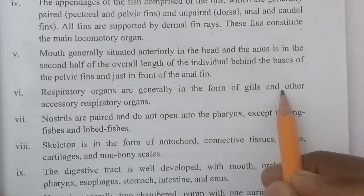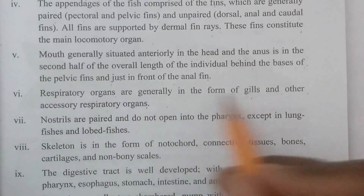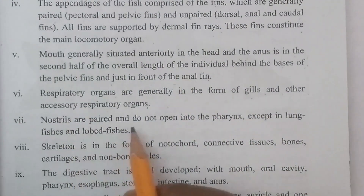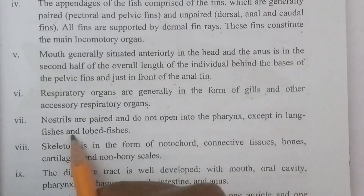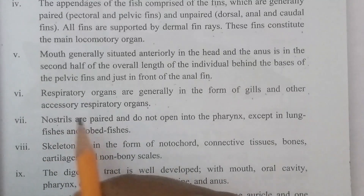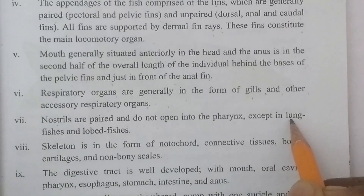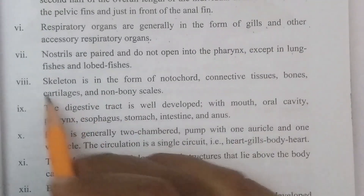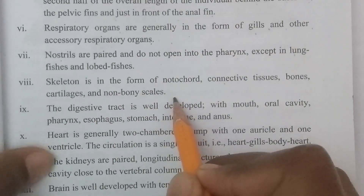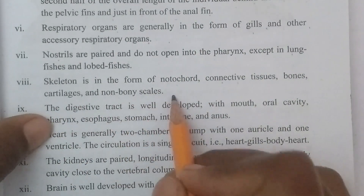Respiratory organs are generally in the form of gills, with other accessory respiratory organs also present. Nostrils are paired and do not open into the pharynx, except in lungfish and lobe-finned fish. The skeleton is in the form of notochord, connective tissues, bones, cartilages, and non-bony scales.